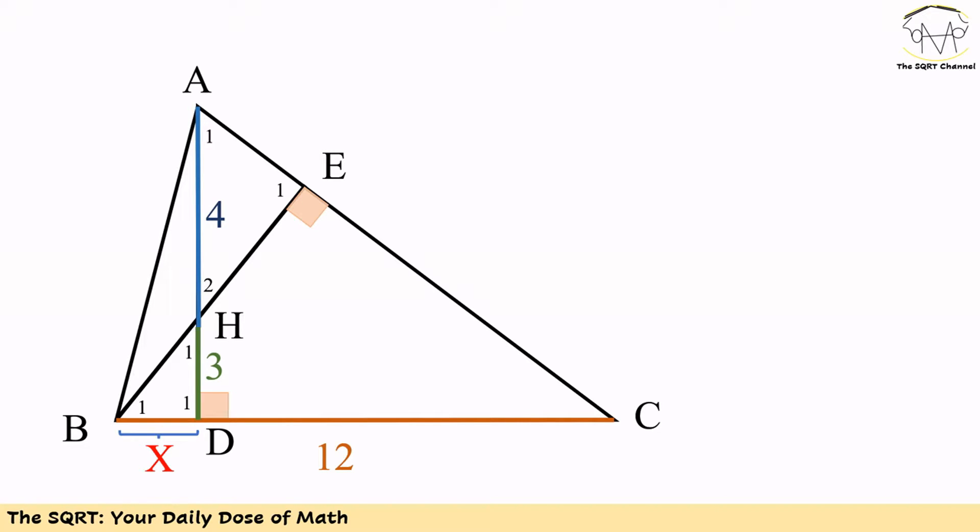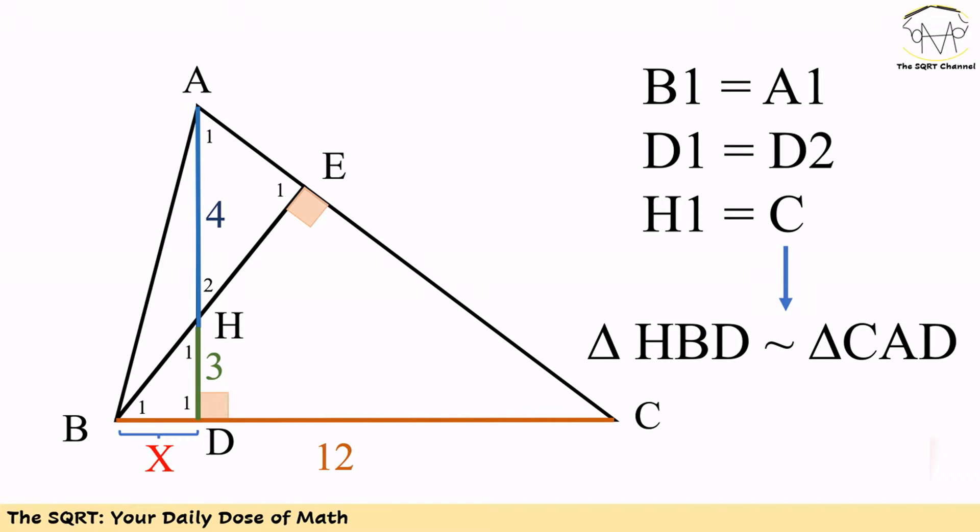We know B1 equals A1, we also know D1 equals D2, both of them are right angles, and then we know H1 equals C. Based on these, we know triangles HBD and CAD are similar.